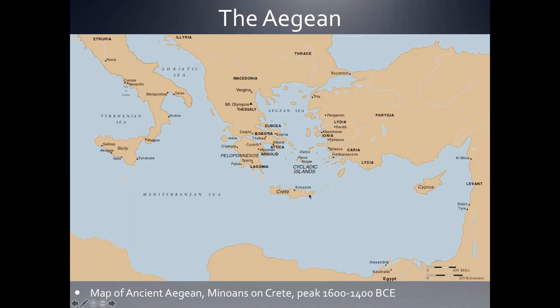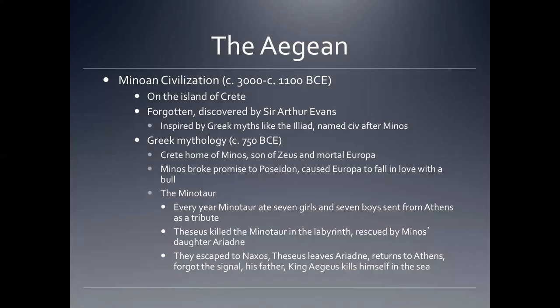The people now known as the Minoans — we don't know what they called themselves on Crete. Their peak was about 1600 to 1400 BCE, and we're not exactly sure what led to their downfall; there are a lot of historical and geological theories we don't need to get into. The Minoan civilization has evidence going back to about 3000 BCE, and after the peak they stuck around until about 1100 BCE, when the culture was basically forgotten.